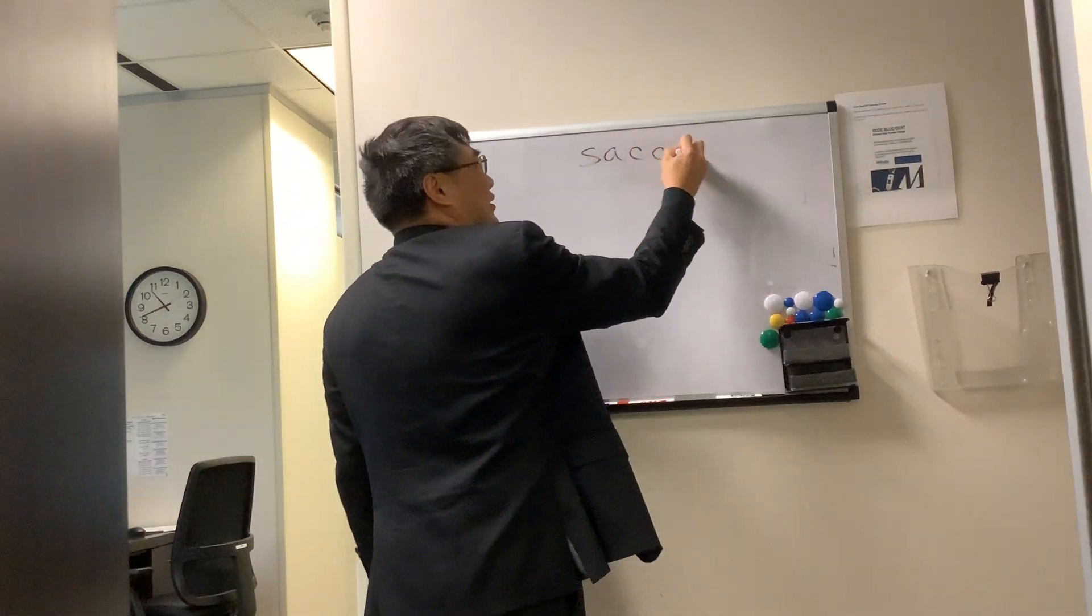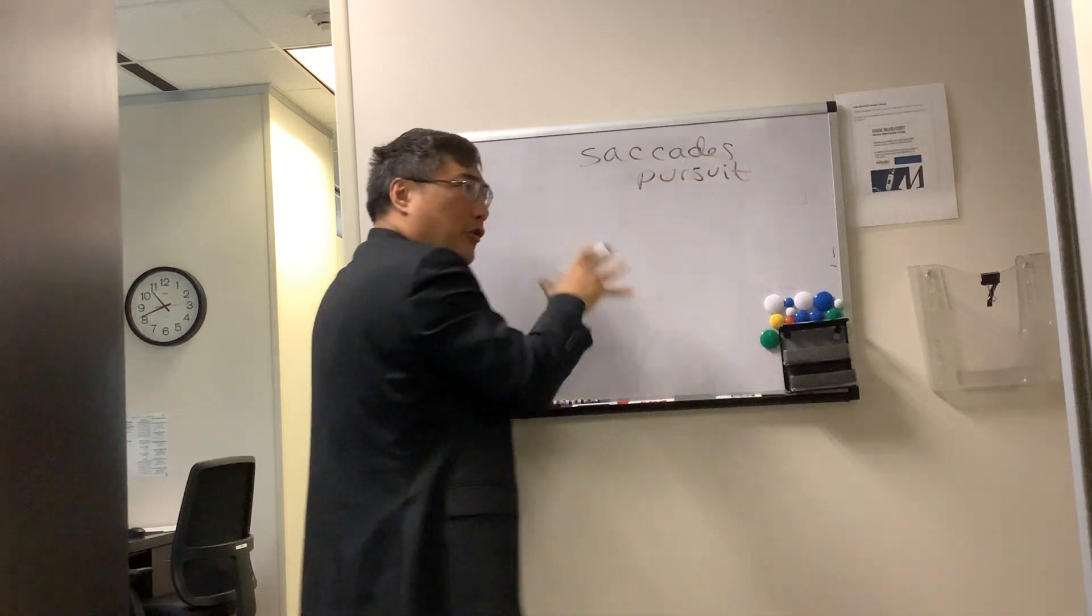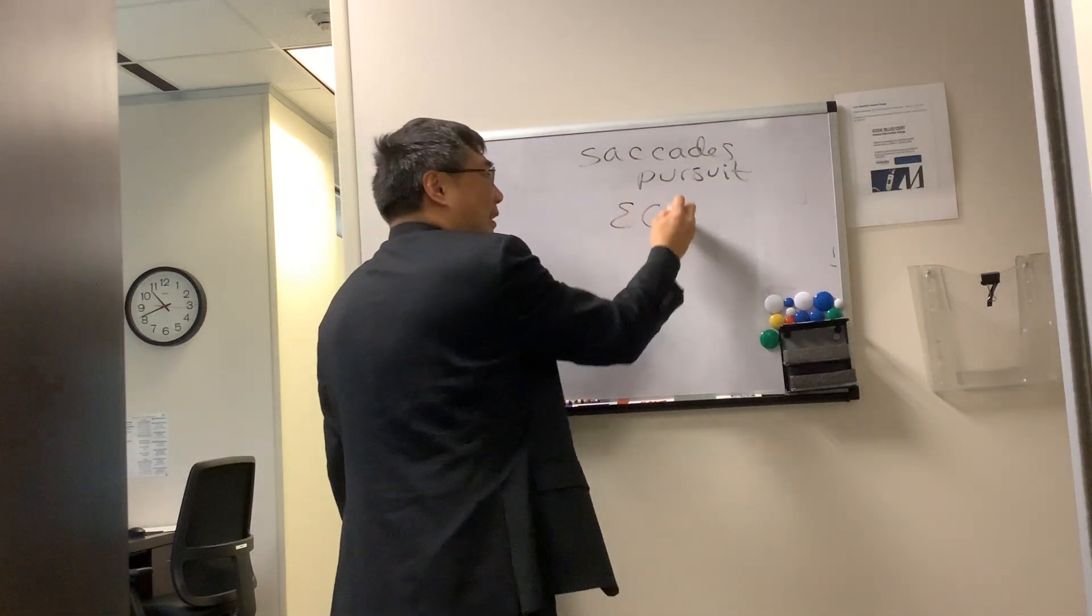All right, somebody wanted to know how we use saccades and pursuit, and how is that different from what we normally test when we're testing extraocular motility?